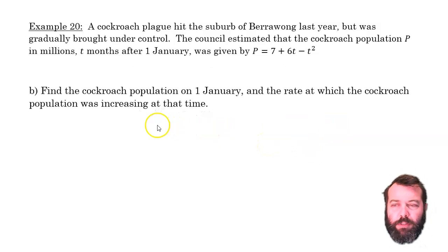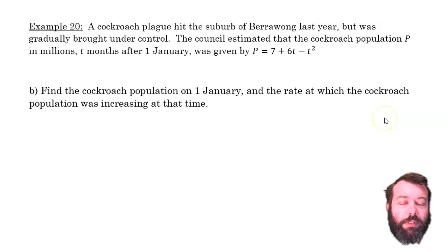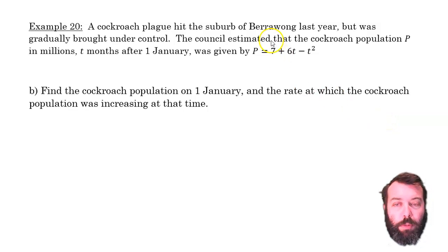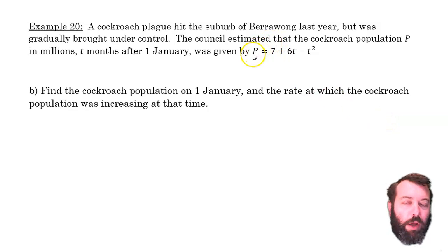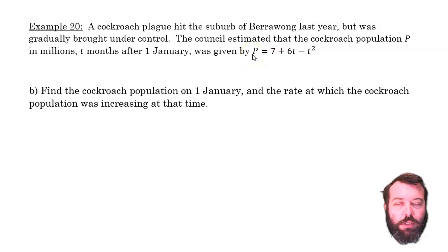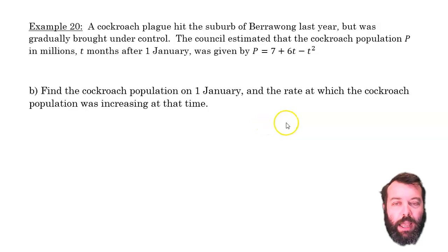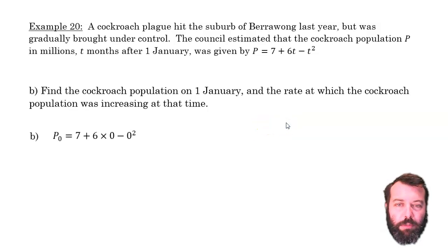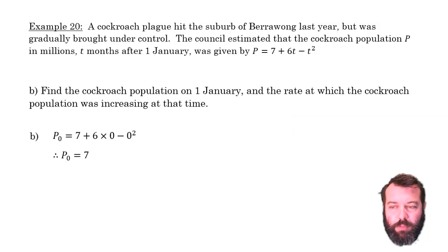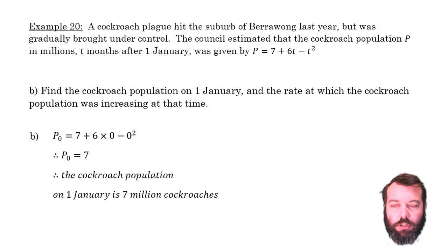Next, we're asked to find the cockroach population on the 1st of January, so that's when t = 0. The original function tells me the population, so I substitute t = 0: P = 7 + 6(0) − 0² = 7. So there were 7 million cockroaches on the 1st of January.